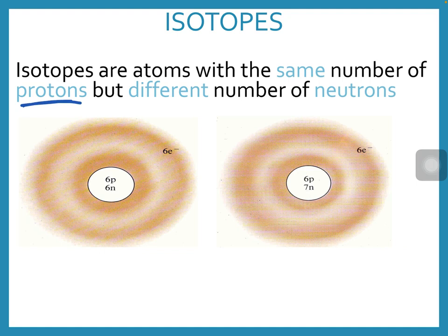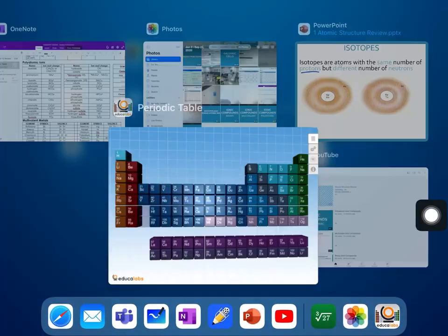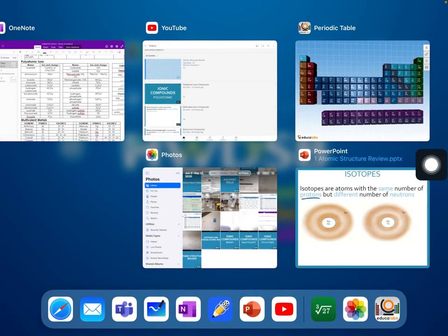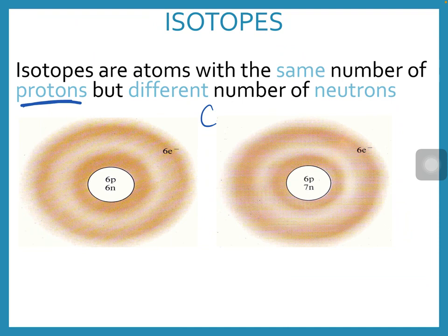For example, here I have six protons in both of these nuclei. If I look at the periodic table, six protons means the element is carbon. So both of these are carbon atoms, but they are isotopes of one another.